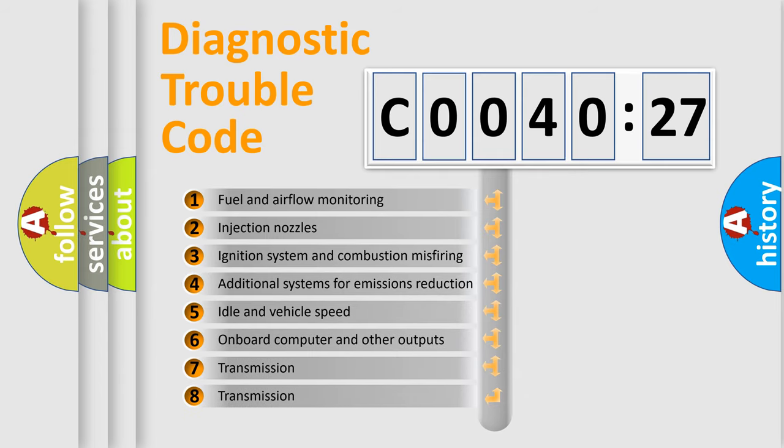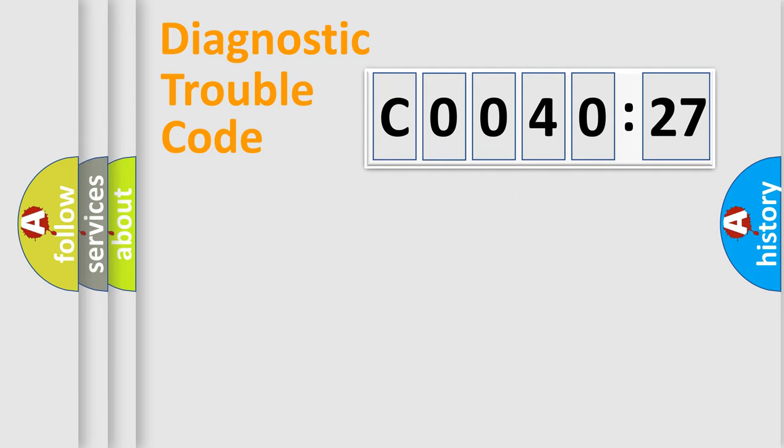The third character specifies a subset of errors. The distribution shown is valid only for the standardized DTC code. Only the last two characters define the specific fault of the group.